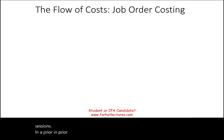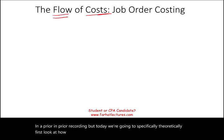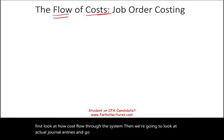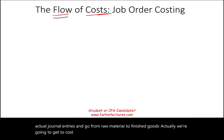Today we're going to specifically, theoretically, first look at how cost flows through the system. Then we're going to look at actual journal entries and go from raw material to finished goods — actually all the way to cost of goods sold. We're going to sell those finished goods.